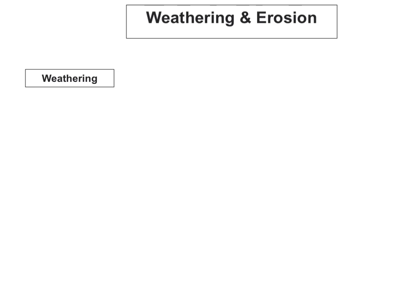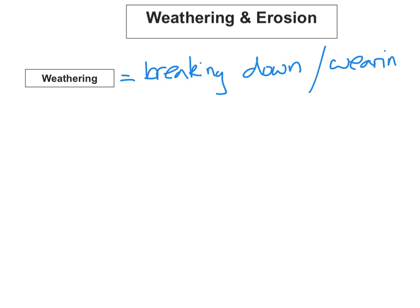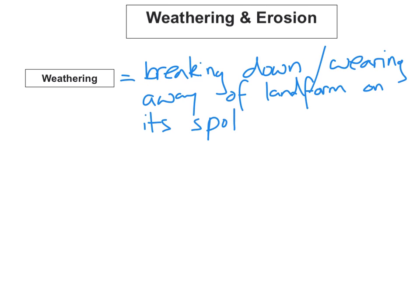So first of all we need to know what is weathering. Weathering is the breaking down or wearing away of landforms on its spot — meaning it happens right there and does not transfer the material anywhere else.